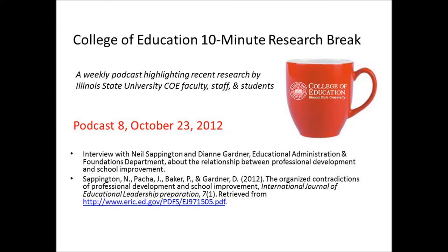Yeah, it was a project that we developed at the master's level, and it requires students to analyze their school improvement plans — so they're using primary artifacts of their school. We provide them information to work in teams of two, possibly sometimes three, to spend quite a bit of time looking at their school improvement plan and compare what the literature says about school improvement planning and where their schools are. We also have them participate in a participatory action research project where they evaluate their school's professional development program, by interviewing someone at the central office level knowledgeable about professional development, somebody at the building level — usually their principal — and then two teachers.